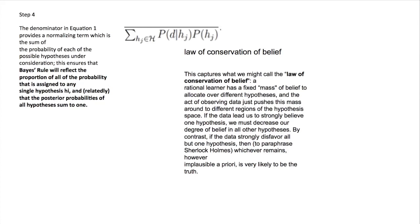This has been called the law of conservation of belief. Just as in physics there are laws of conservation of energy or conservation of momentum, here is the law of conservation of belief. A rational learner has a fixed mass, so to speak, of belief to allocate over different hypotheses, and the act of observing data just pushes this mass around to different regions of the hypothesis space. If the data lead us to strongly believe one hypothesis, we must decrease our belief in the others. If the data strongly disfavor all but one hypothesis, then, to paraphrase Sherlock Holmes, whatever remains, however implausible a priori, is very likely to be the truth.